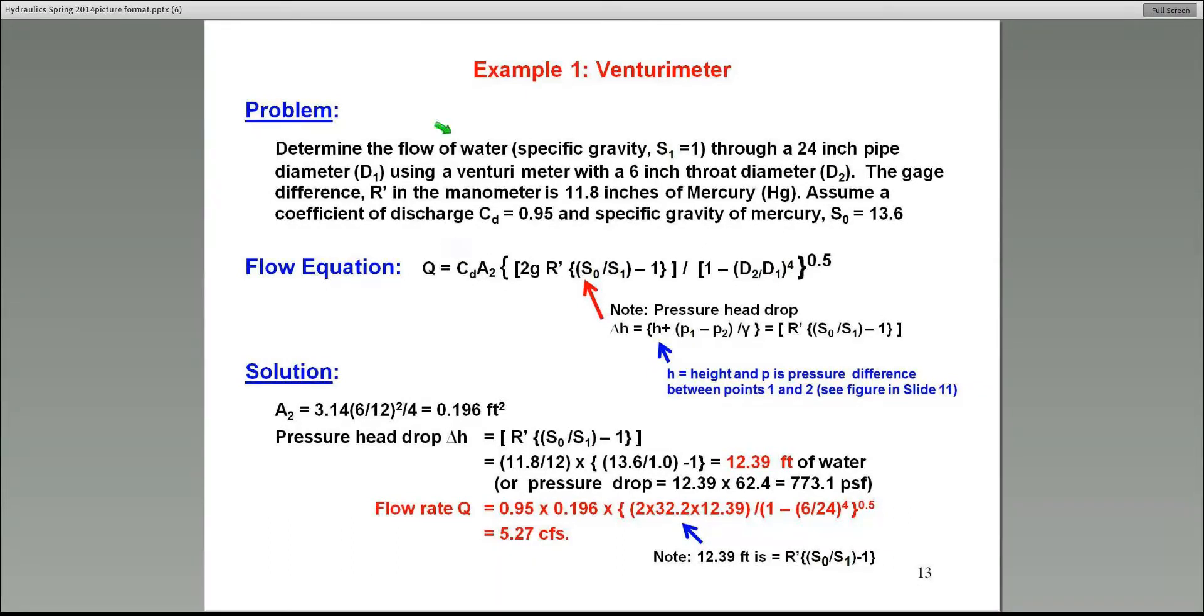Here's the flow of water. Specific gravity is one. It goes through a 24-inch pipe. That's D1. Using a venturi meter with a six-inch throat. That means the D2 is six inches. Remember, since we're taking the ratio of these two diameters, we don't have to convert to consistent unit of feet. The gauge difference in the manometer is 11.8 inches. Again, it's given in inches, so be careful because the consistent unit, as I pointed out to you earlier, is feet, not inches. So it's 11.8 inches. That's your R prime in the equation.